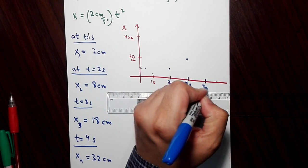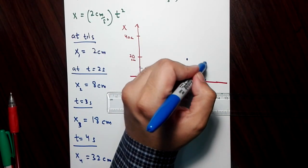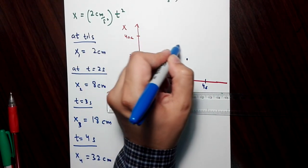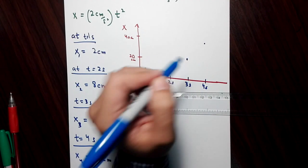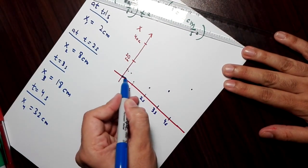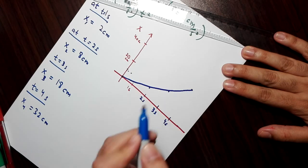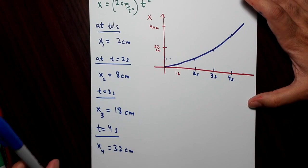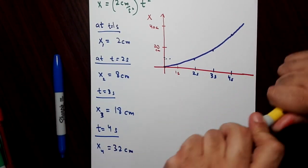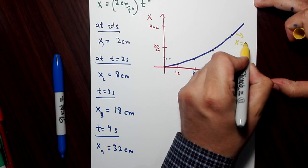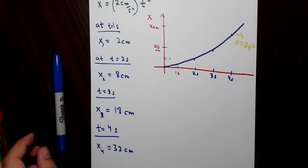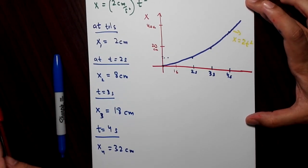That's a big jump — it has a square dependence, it grows fast. At t equals four seconds you get 32, which is somewhere around here on the graph. If you join the points you get a parabola. This is described by x equals two t squared.